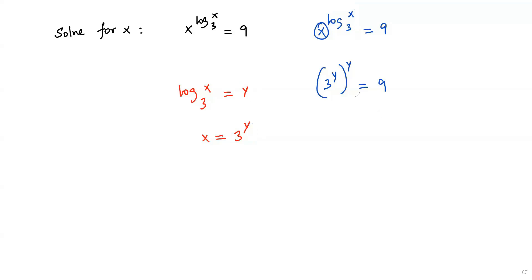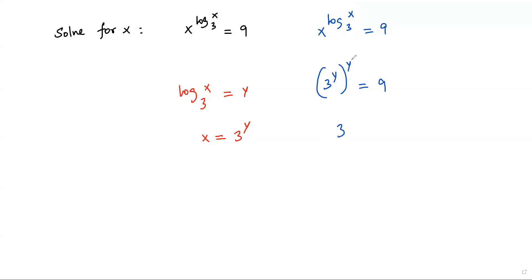So I get 3 to the power y, again to the power y, is equal to 9. Here we have base 3, the first exponent y for the complete expression, and again an exponent y. Whenever we have two exponents like this, we can multiply them. So 3 to the power y times y gives y squared, and we get 9 on the right side.